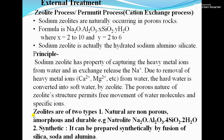There are two types of zeolite. First is natural zeolite — non-porous, amorphous and durable; example is nitrolyte: Na₂O·Al₂O₃·4SiO₂·2H₂O. Second is synthetic zeolite, which can be prepared synthetically by fusion of silica, alumina, and soda.